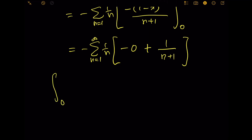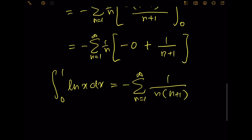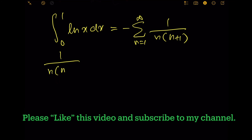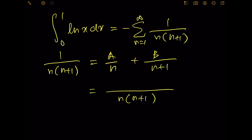This means the integral from 0 to 1 of ln(x) dx equals negative sum from n equals 1 to infinity of 1 over n(n plus 1). We use partial fractions: assume 1 over n(n plus 1) equals A over n plus B over n plus 1, which gives A(n plus 1) plus Bn equals An plus Bn plus A.